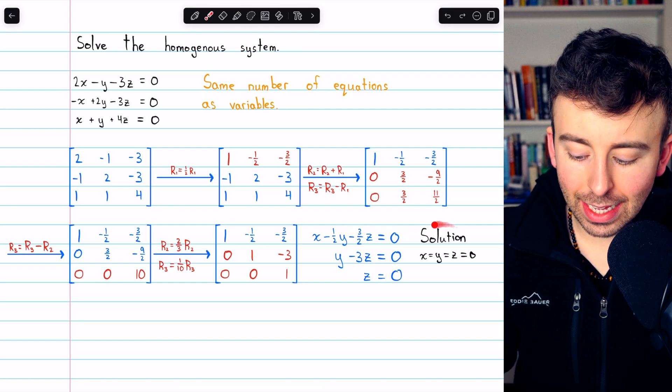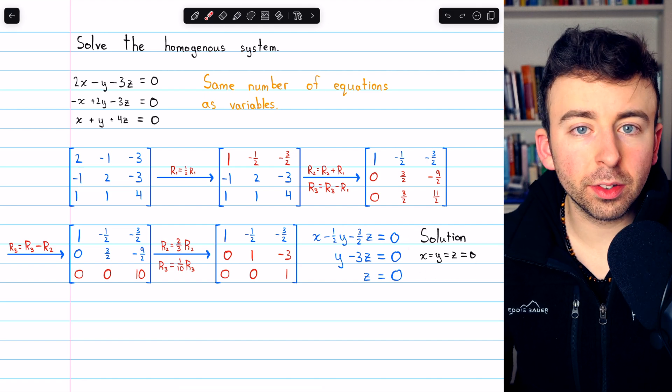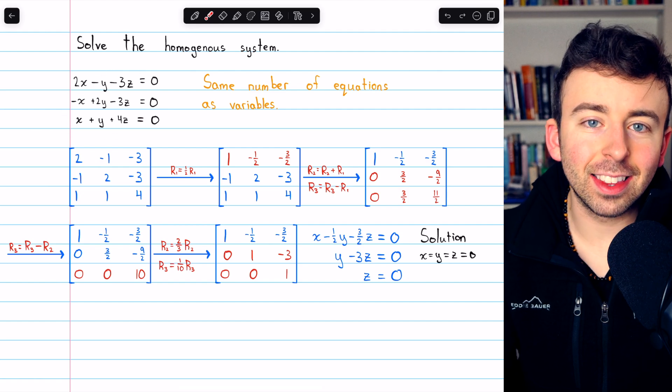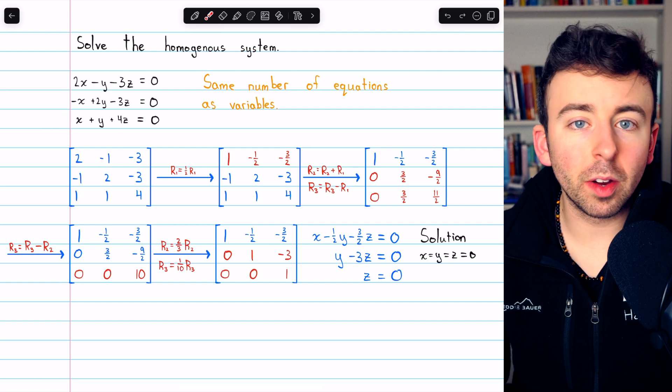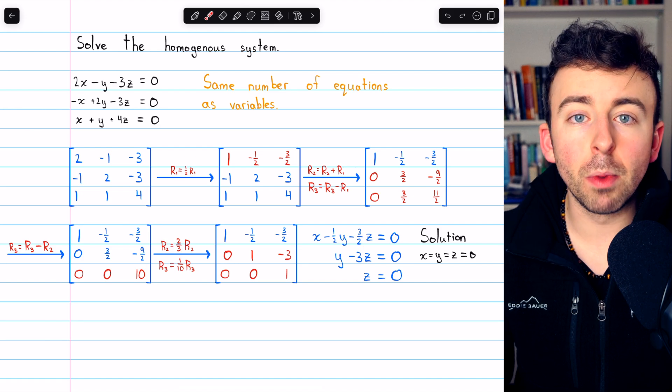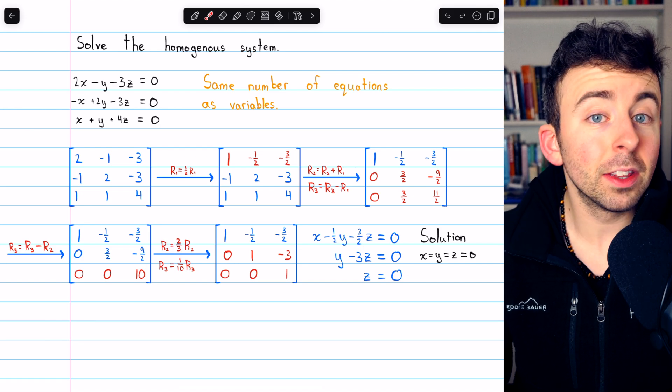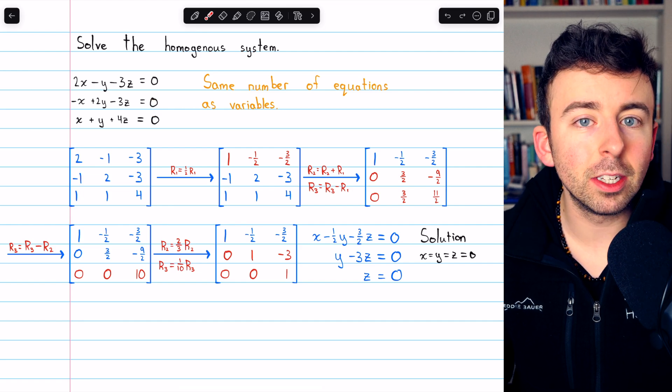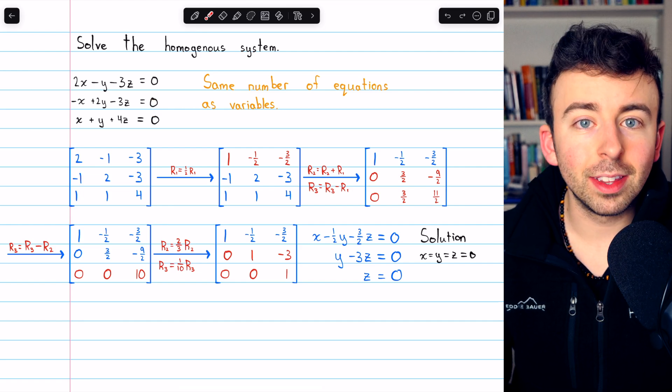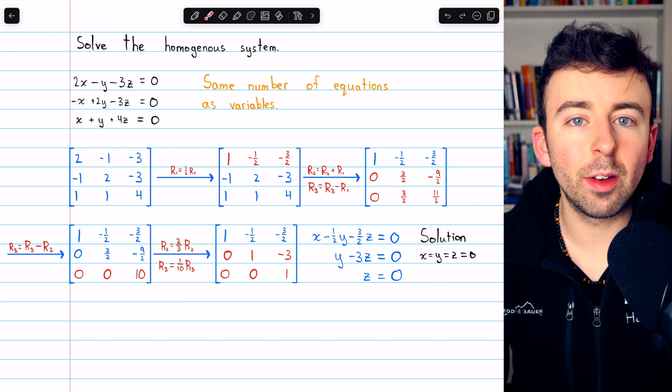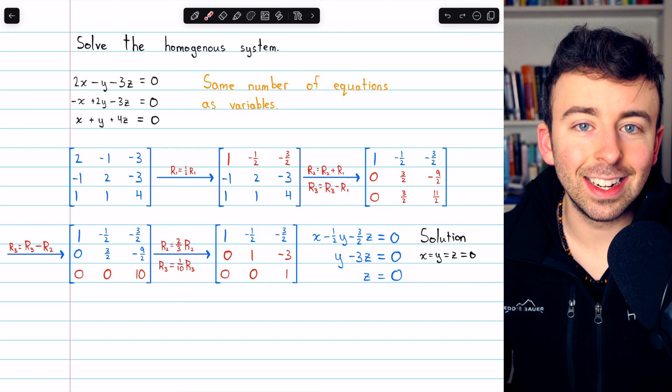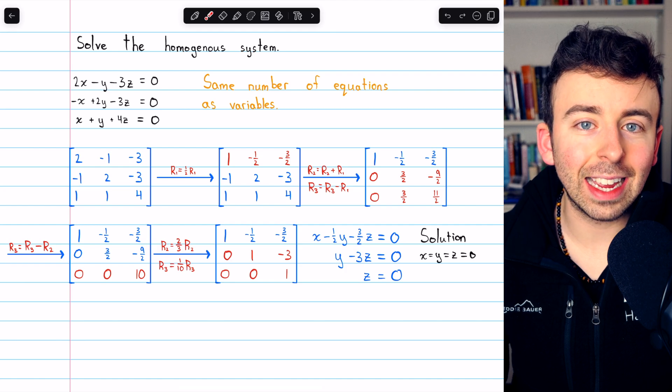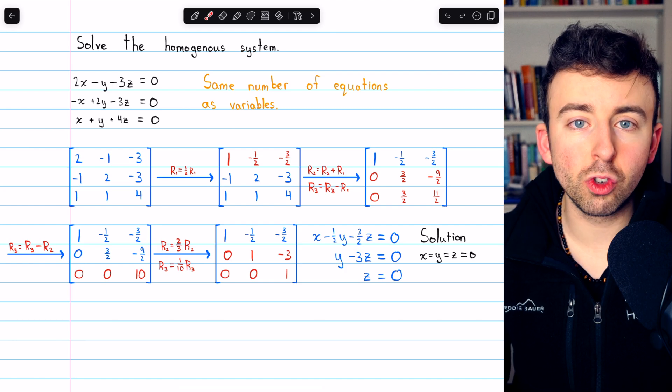And again, in this example, there's no way we could have immediately known that there was only the trivial solution by just glancing at the system. Having the same number of equations as variables still leaves multiple possibilities open. There could be infinitely many solutions if two of the equations happen to be redundant, or we could have this situation where we have a trivial solution and none others. Let's move on to the second example where we will use Gauss-Jordan elimination.